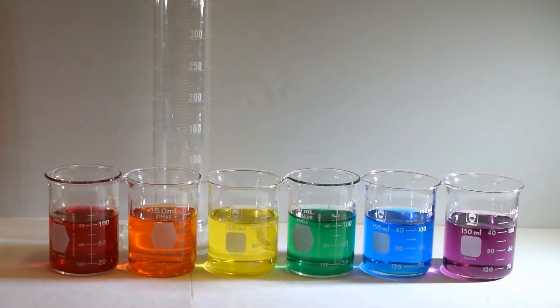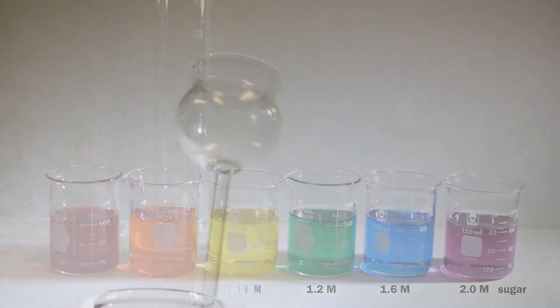Next, the six solutions of various densities are lined up beside the cylinder and will be poured into the funnel reservoir one after the other, starting with the least dense red solution and ending with the most dense purple solution. So, let's begin.